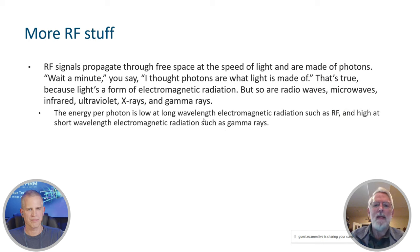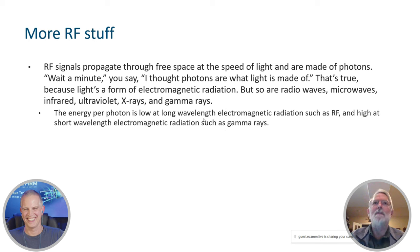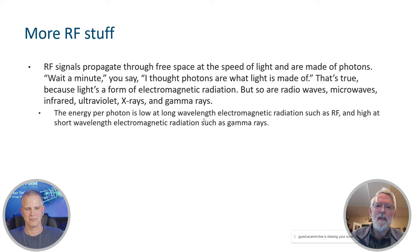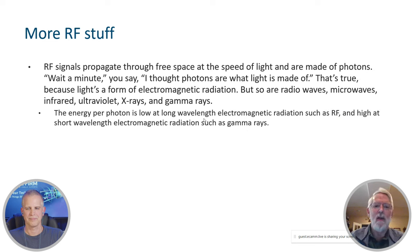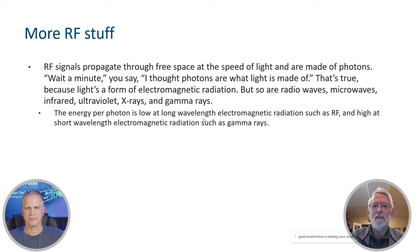RF signals propagate through free space or a vacuum at the speed of light and are made of photons. You might say, 'Wait, I thought photons are what light is made of.' Yes — light is made of photons, but that's because light is a form of electromagnetic radiation. Radio waves are electromagnetic radiation, and so are microwaves, infrared light, ultraviolet light, X-rays, and gamma rays — they're all made of photons. The energy per photon is low at long wavelengths or low frequencies, such as RF, and high at short wavelengths, such as gamma rays.